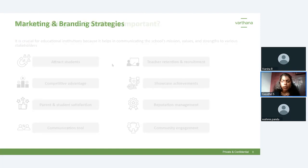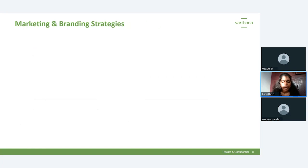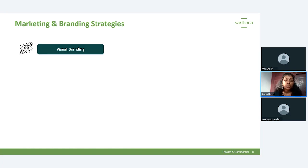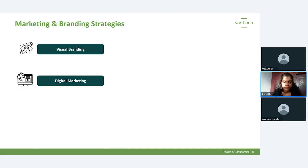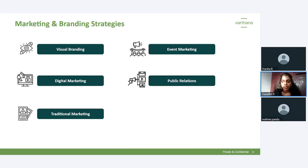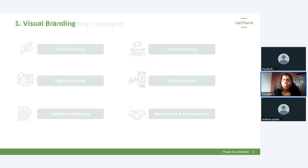Now let's look at the different strategies a school can follow. We've talked about what marketing and branding are and why they're important. Here we are recommending strategies that will be very helpful for schools to achieve certain targets. The six strategies are: visual branding, digital marketing, traditional marketing, event marketing, public relations, and partnership and collaboration.